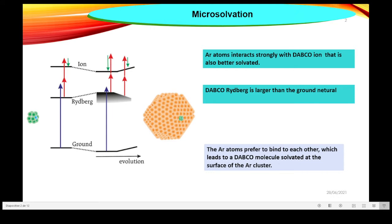The solvation of the Dabco molecule by argon atoms is examined here using quantum chemistry methods. The configuration of the argon atoms around the Dabco molecule is not obvious. Two configurations are possible: the argon atoms prefer to bind to each other, which leads to a Dabco molecule solvated at the surface of the argon cluster, or the argon atoms prefer to bind to Dabco in equivalent positions, which results in a Dabco molecule inside the rare gas cluster.